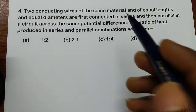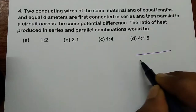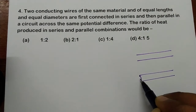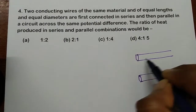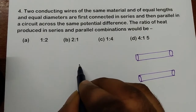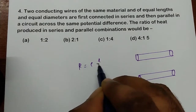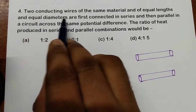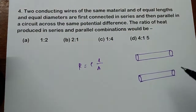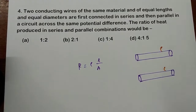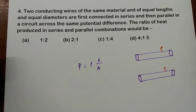Two conducting wires of same material — same material means same resistivity. They are made up of the same material, so resistivity will be the same. Let me take two conducting wires here. Before writing this, I want to write the resistance formula: resistance is equal to rho L by A.